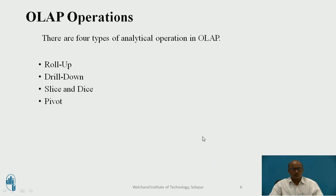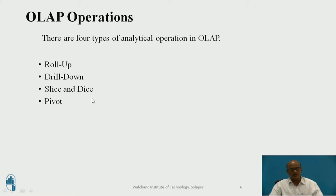Now OLAP operations. There are four types of operations in OLAP. The first one is called the roll-up operation, the second one is called the drill-down operation, the third one is called slice and dice, and the fourth is pivot.